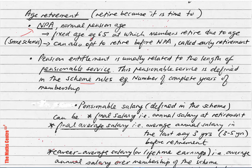Let's look at age retirement. Age retirement benefits are paid when a member of the scheme retires because he or she has attained retirement age. Let's define Normal Pension Age, or NPA — in some books referred to as normal retirement age. It is a fixed age.